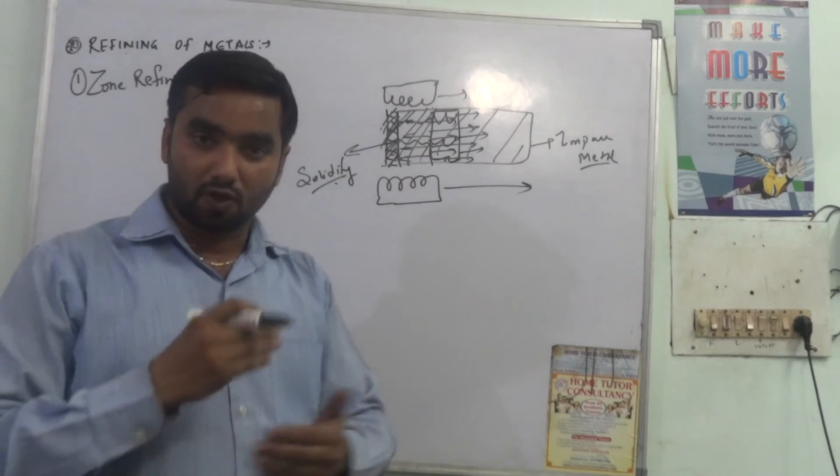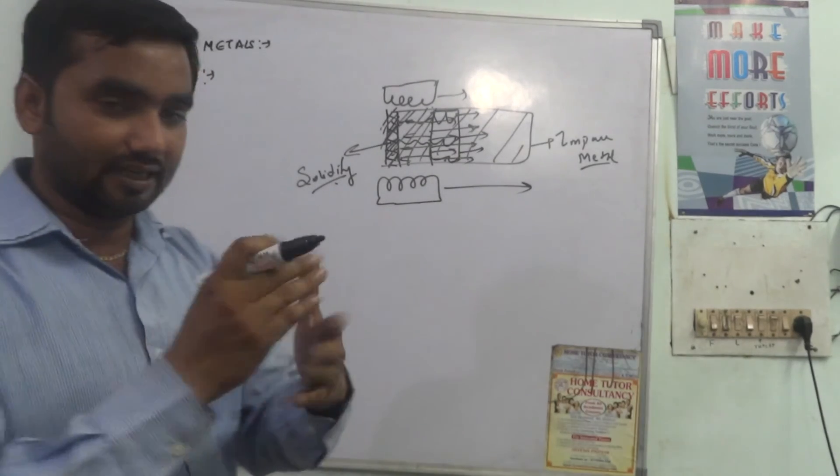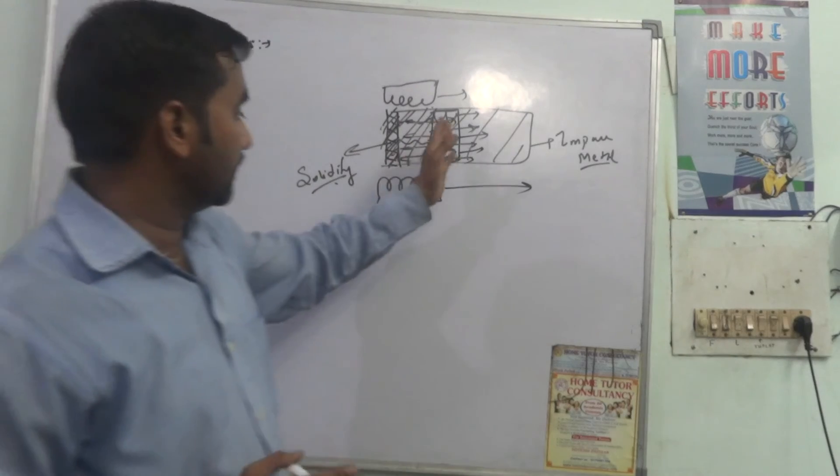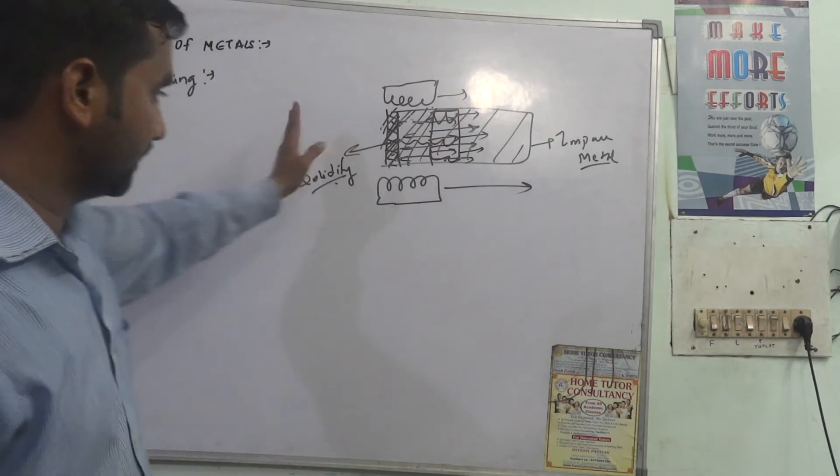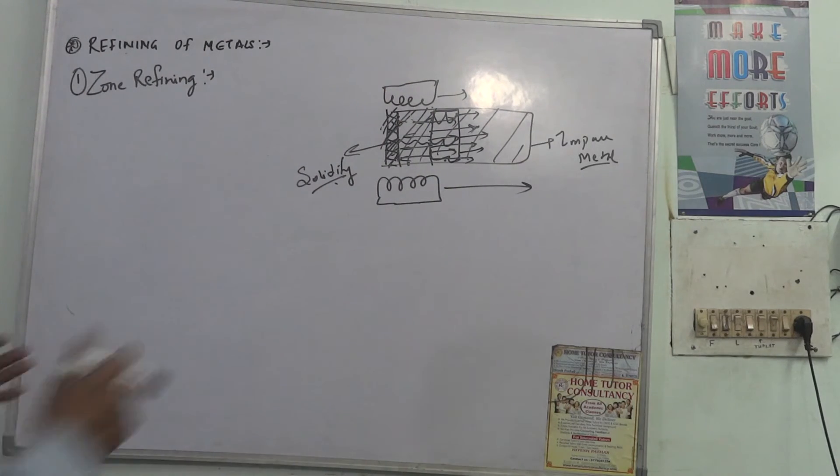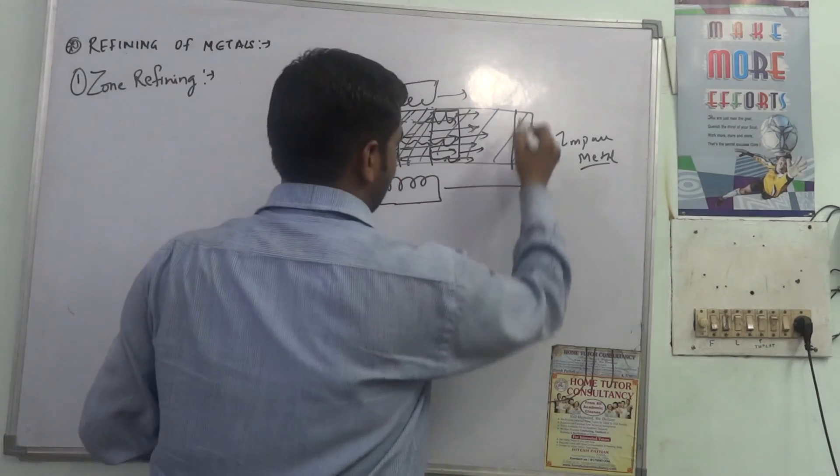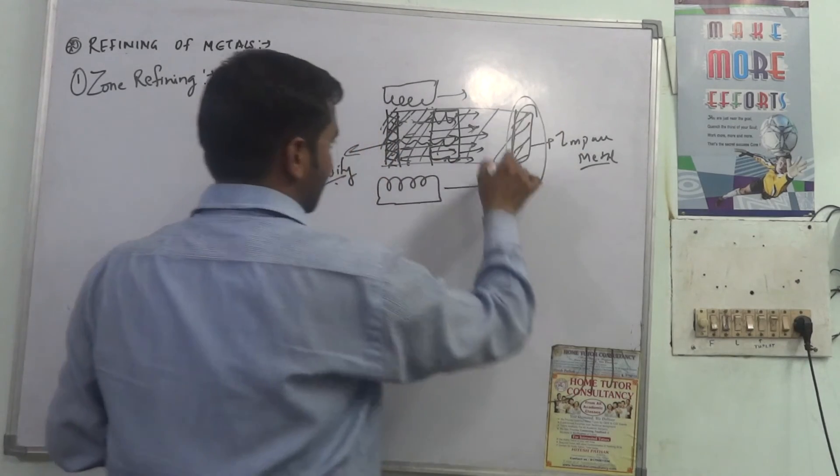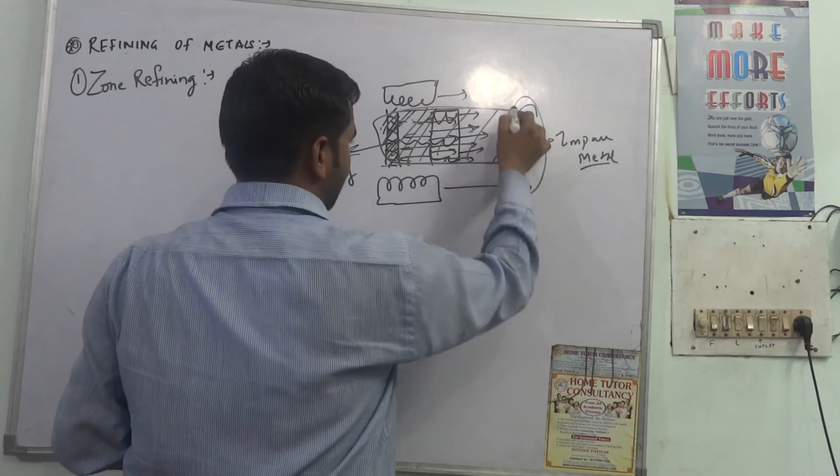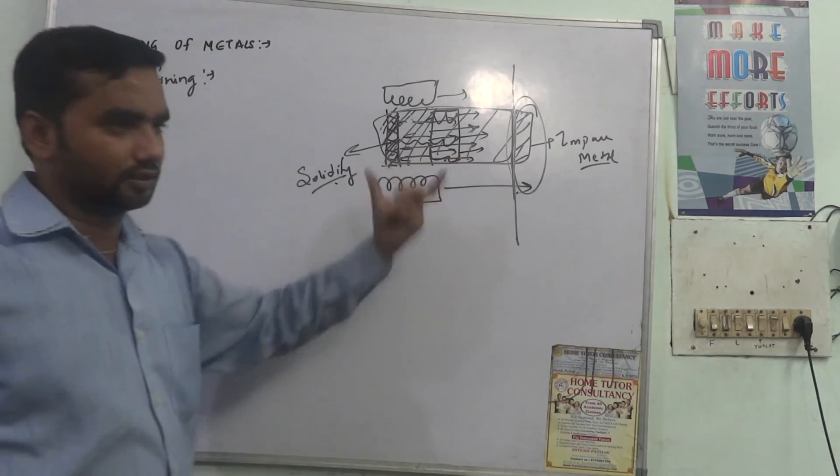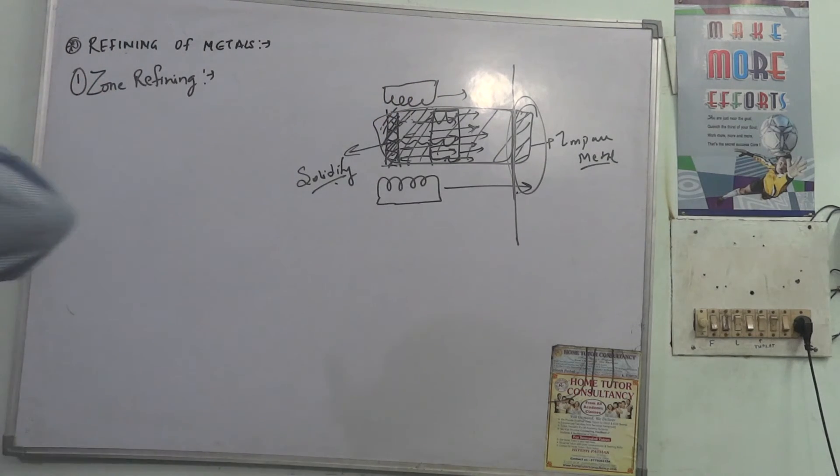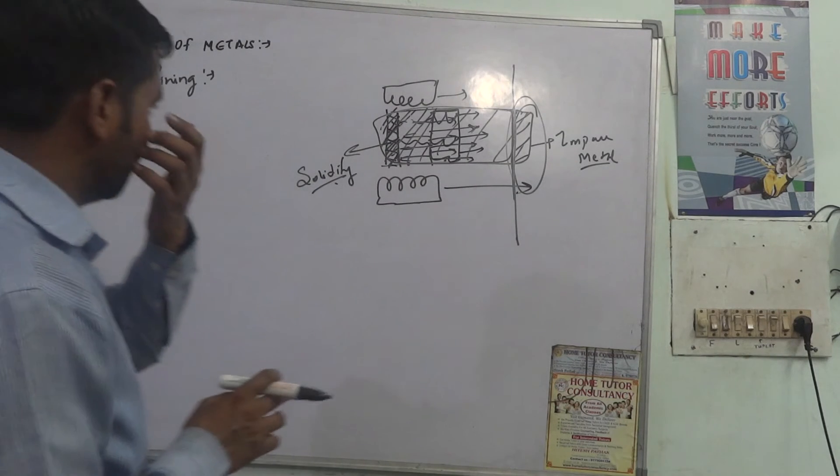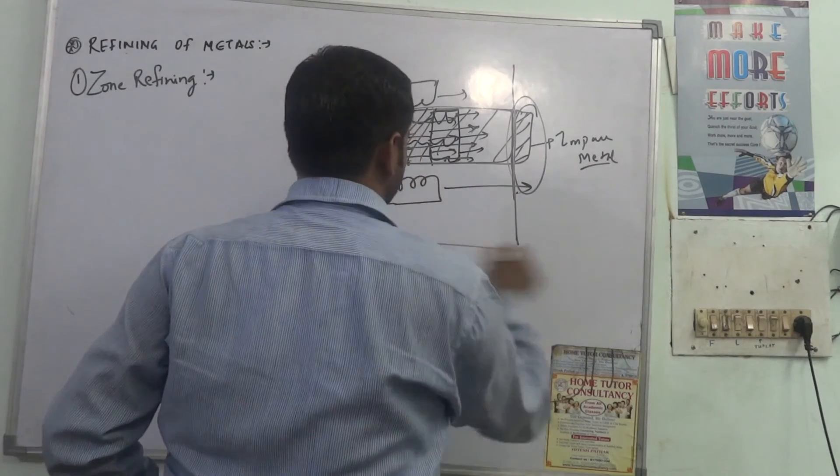As the heater shifts, the pure metal solidifies and the impurities remain molten. This is the process of getting the pure metal or purest form of the metal in a particular circular zone from crude metal.